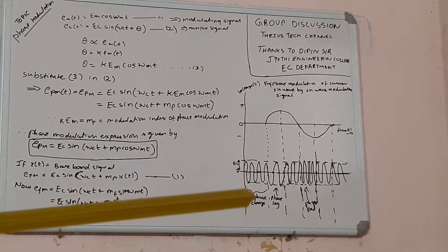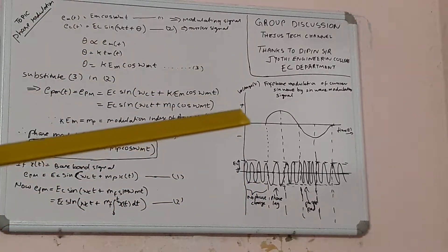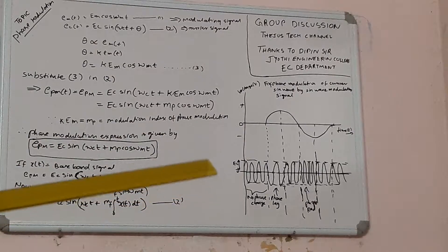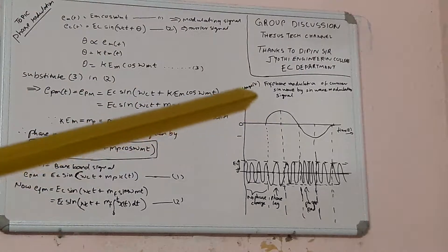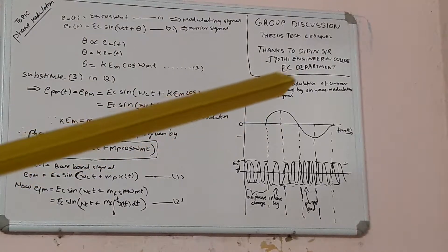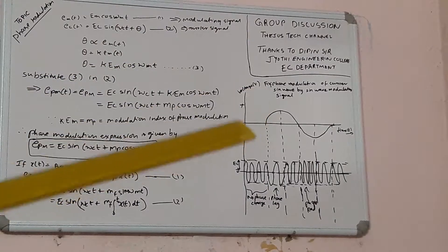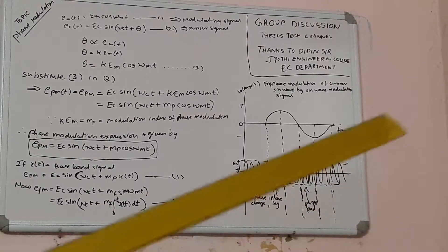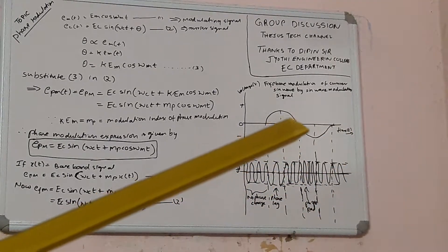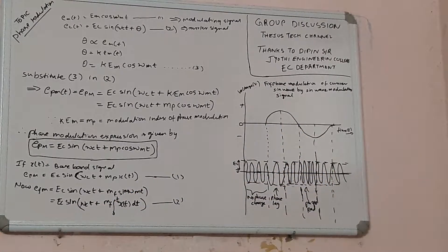When there was no modulating signal, no phase change was happening. When the amplitude goes positive, carrier stretching occurs, which leads to phase lag. When the negative amplitude comes, carrier compression occurs and phase lag appears.